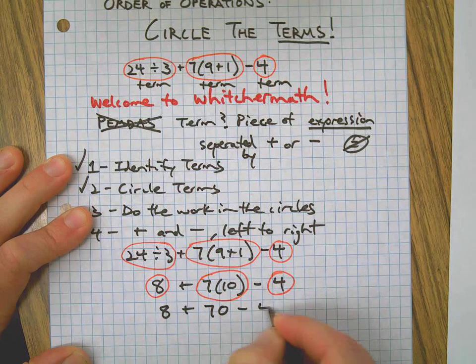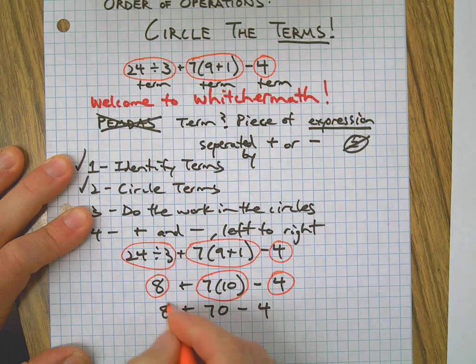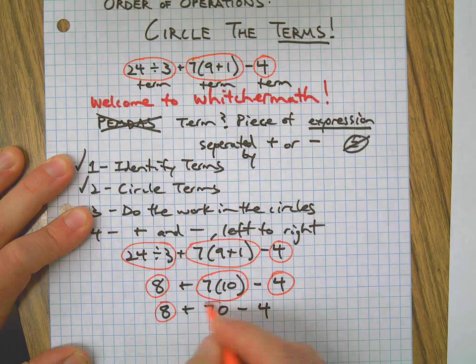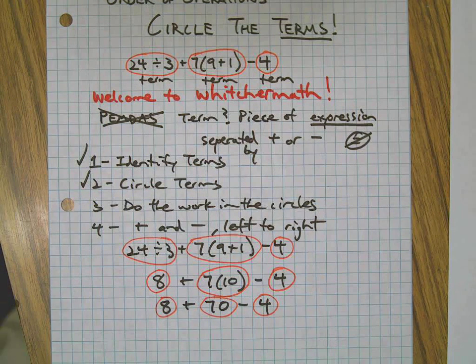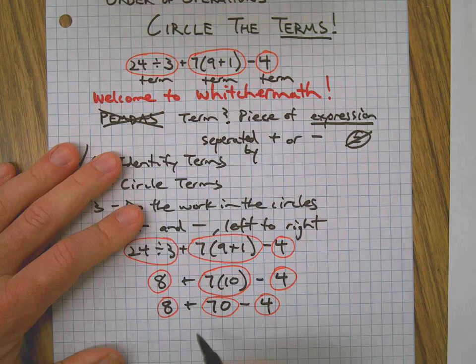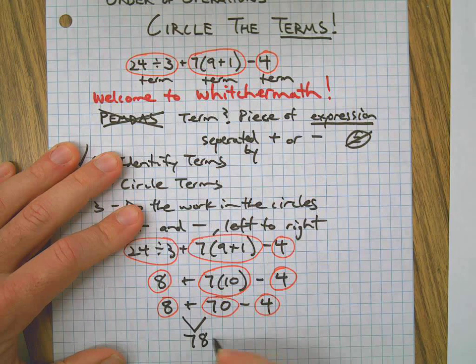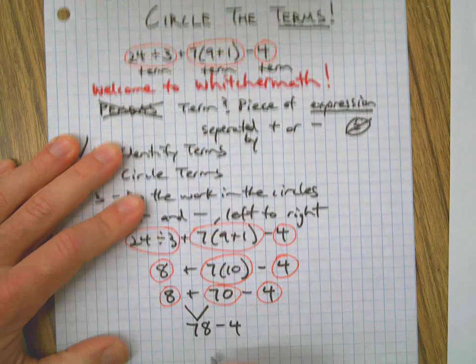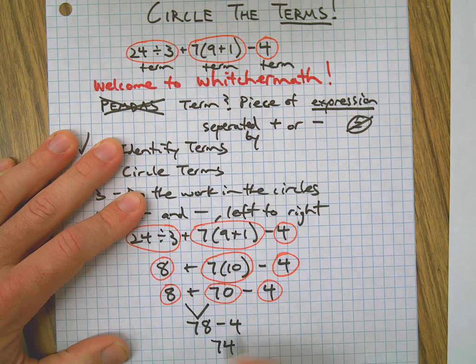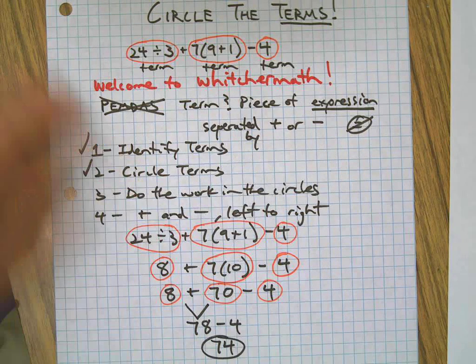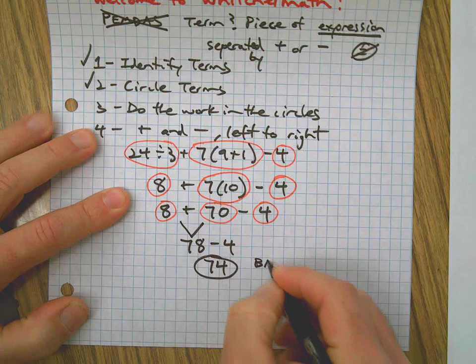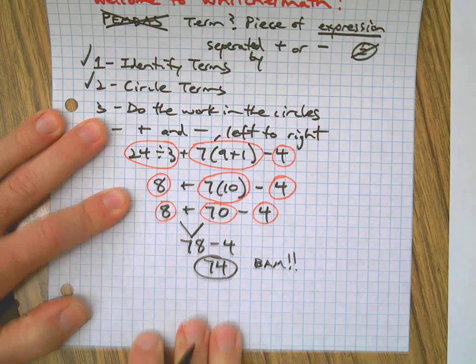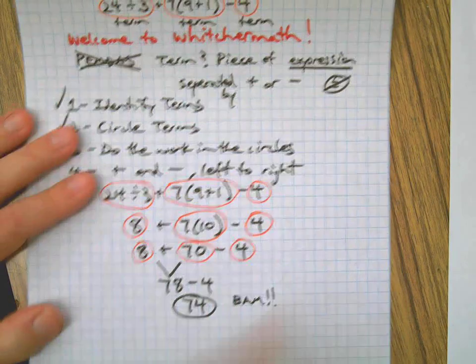7 times 10 is 70. At this point it's pretty easy to see what our answer is going to be. I'm going to group those together - 8 plus 70 is 78 minus 4, and then finally we get 74. BAM! That's our answer.